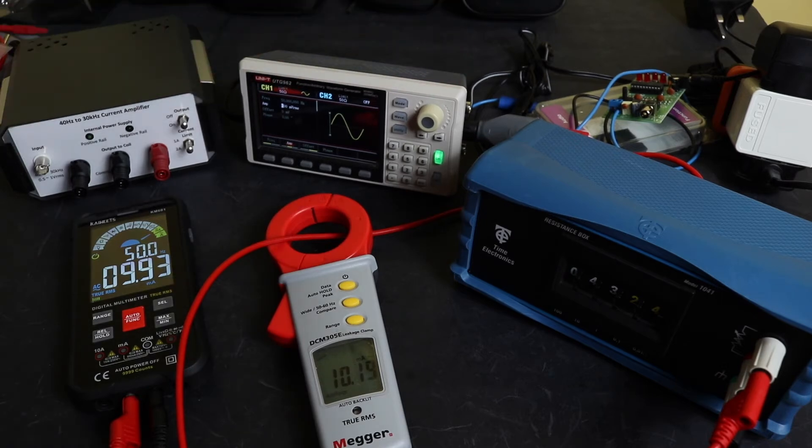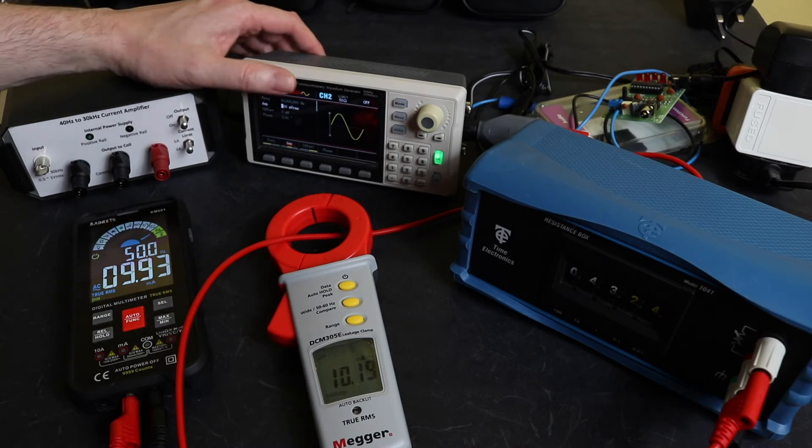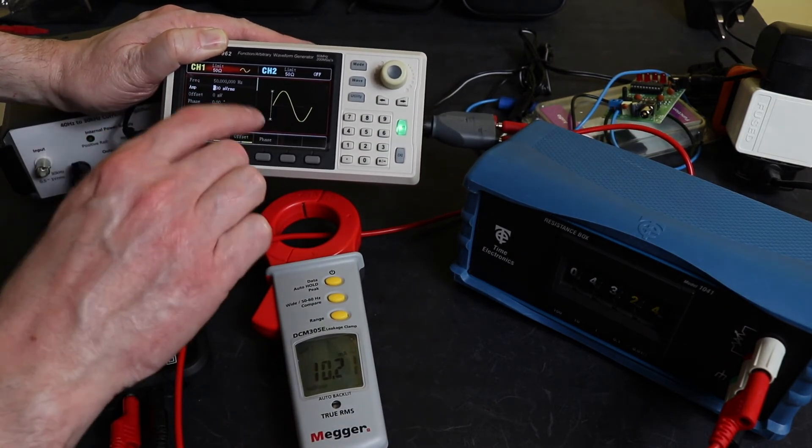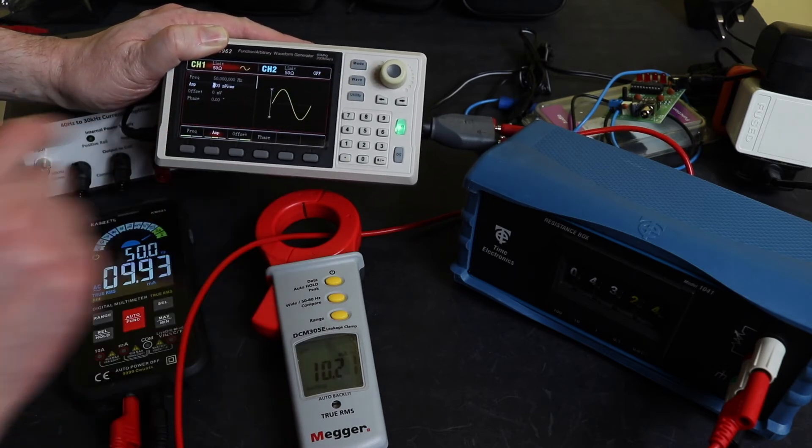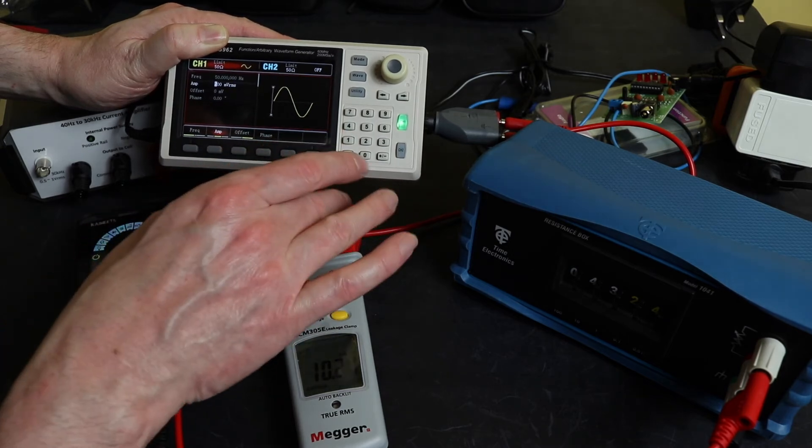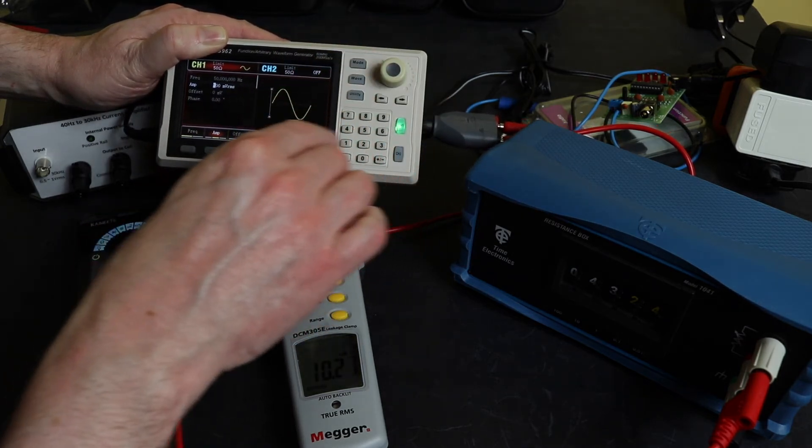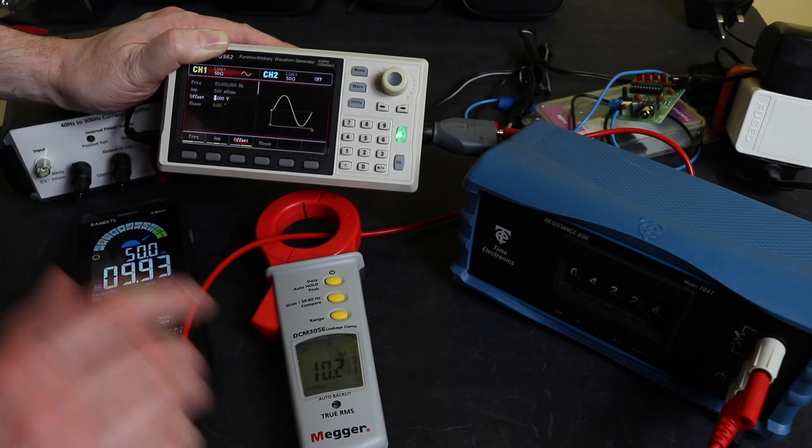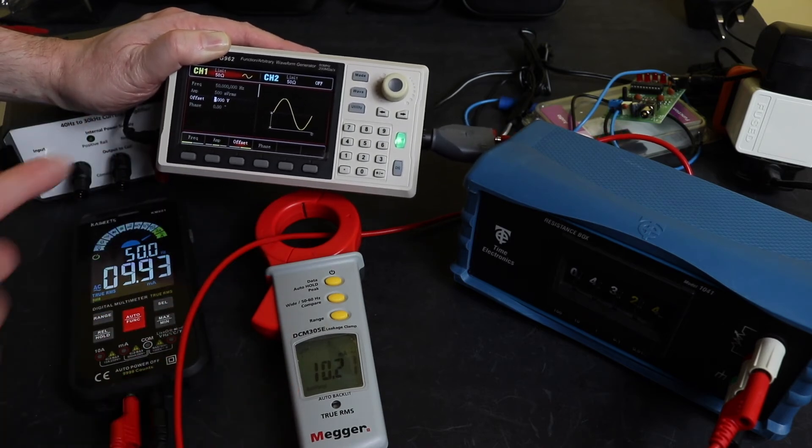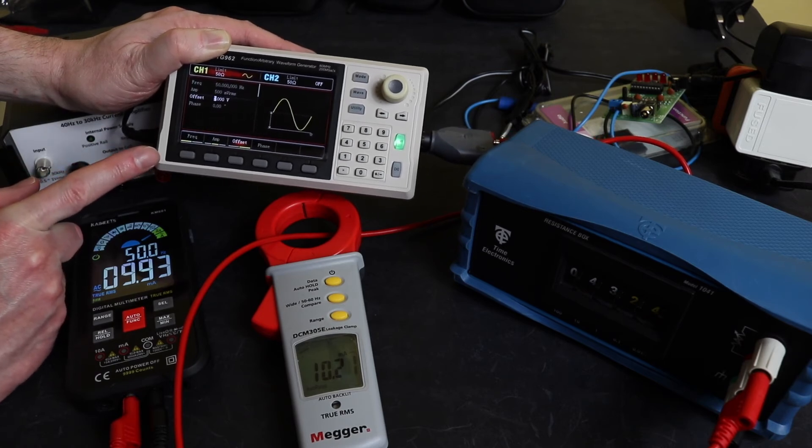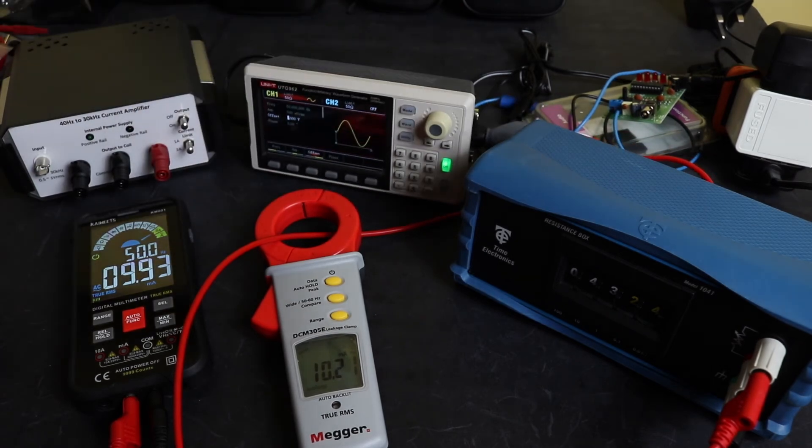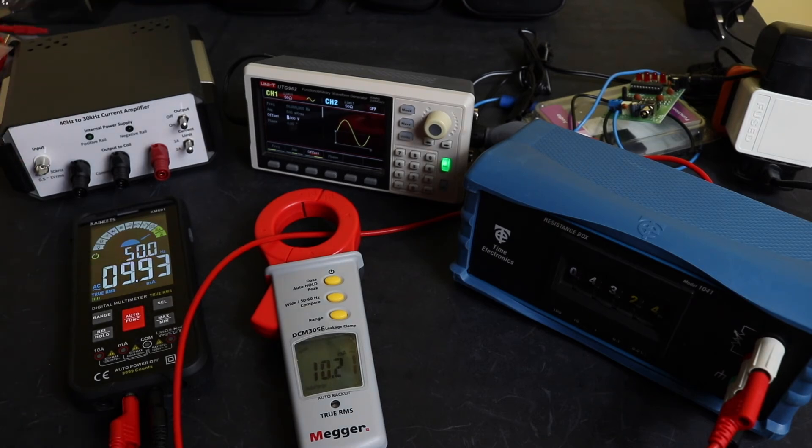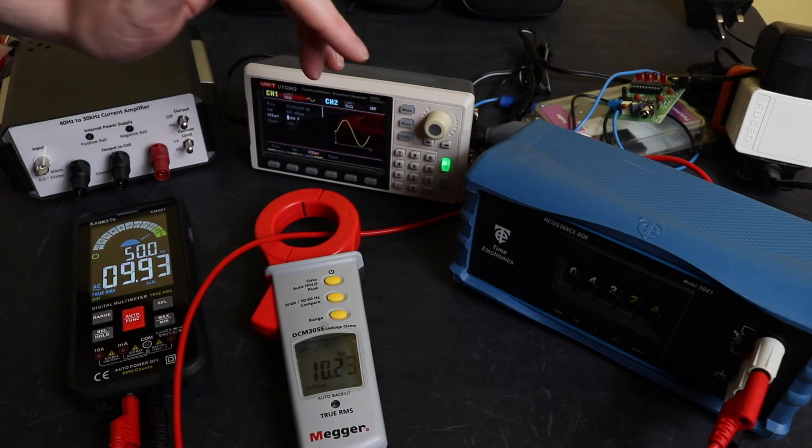What I did notice whilst I was playing around with this is that you can actually put an offset onto this instrument. At the moment it's acting like a genuine AC waveform alternating around zero volts. If I go to the offset there and I changed it now so that my waveform is completely above zero volt line, I'm still reading 10.20 milliamps. That's quite handy because that means that I can use a single rail function generator or amplifier as opposed to the dual rail one that I built up there, which makes life a little bit easier. So I'll just take this out of circuit and put in another unit to show you an even cheaper way of testing these current clamps out.